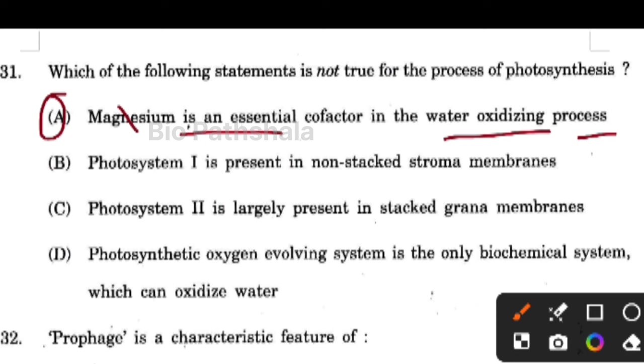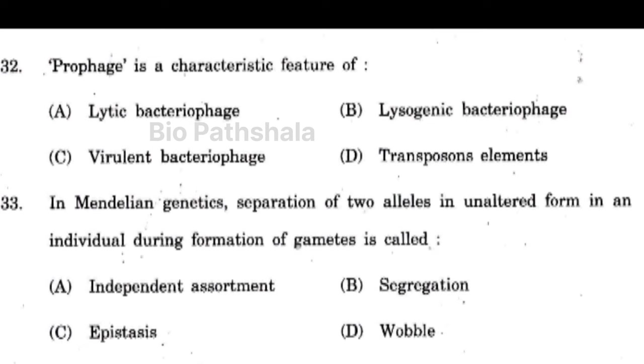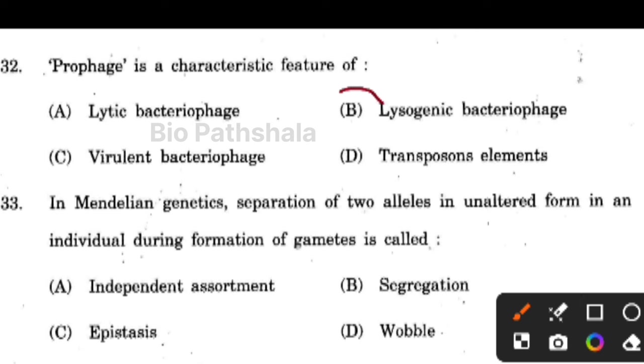Next question: prophage is a characteristic feature of option number B — lysogenic bacteriophage.